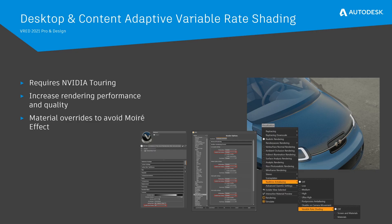With FRED 2021 it is now possible to use variable rate shading also in desktop mode. As an extension to the real-time anti-aliasing, VRS can be activated in the main menu. The VRS quality is connected to the real-time anti-aliasing settings and can be adjusted in the preferences. For materials with small patterns that usually cause issues and moiré effects — like carbon fiber — it is possible to override the variable rate shading quality per material in the material editor comment tab.